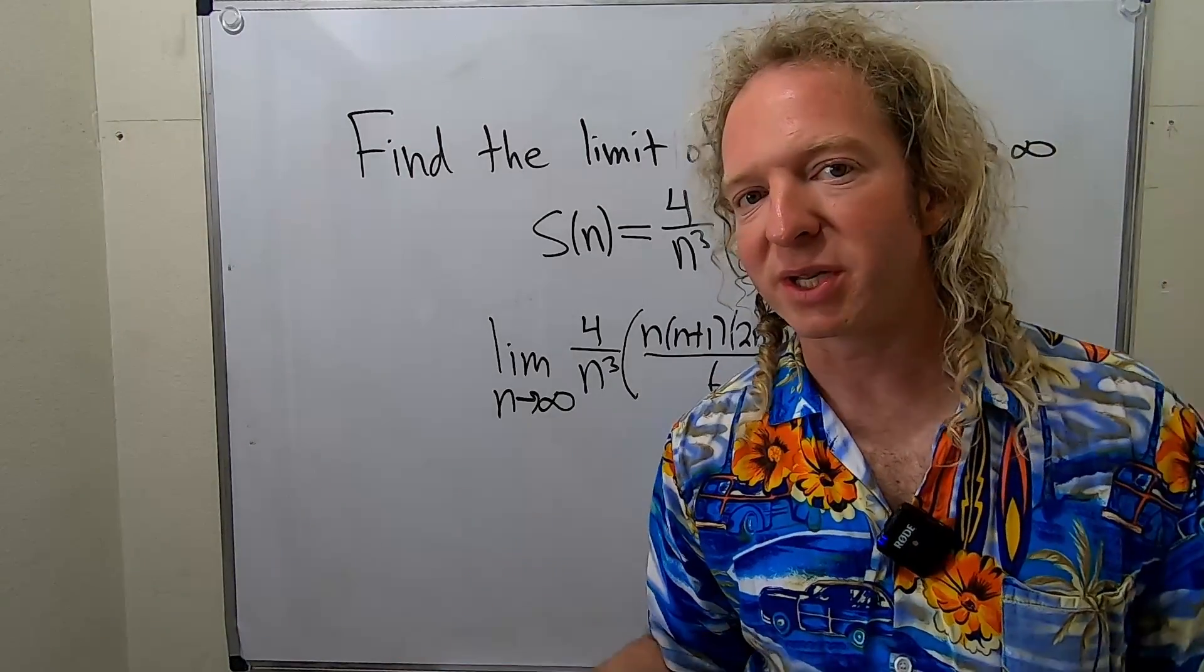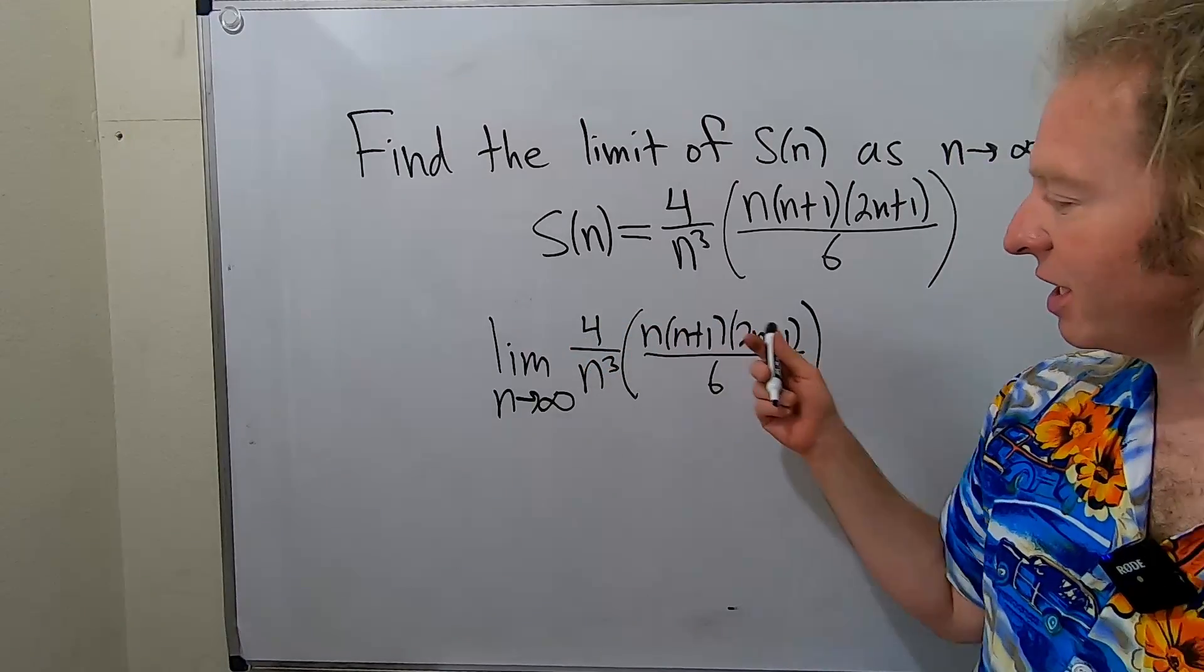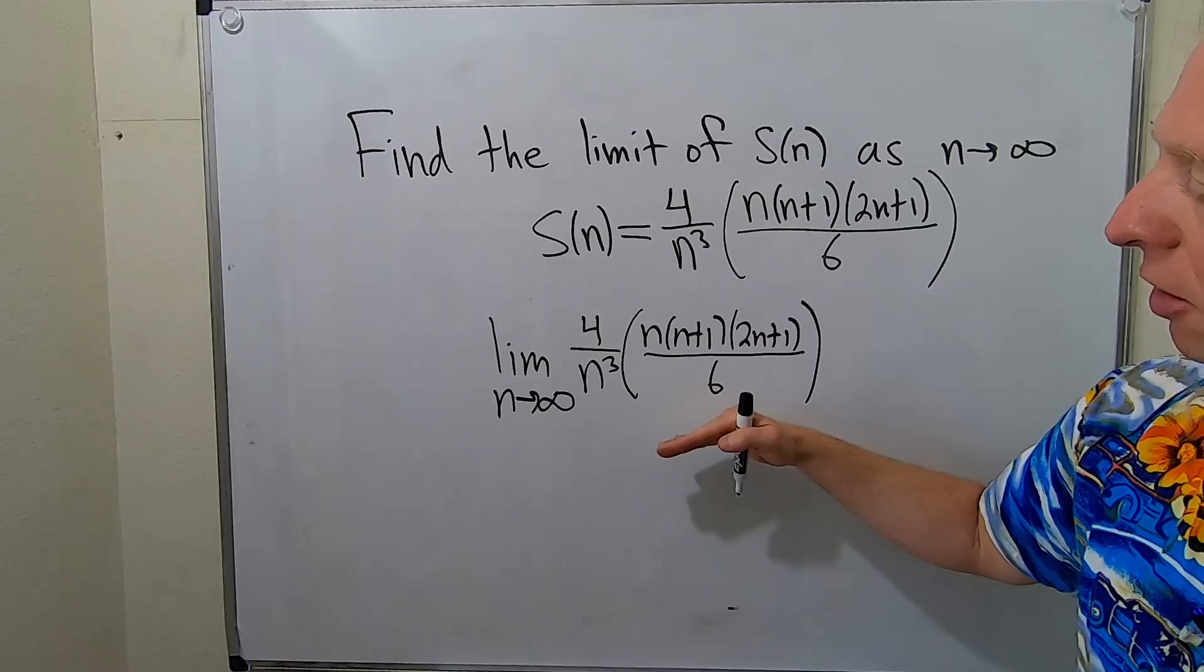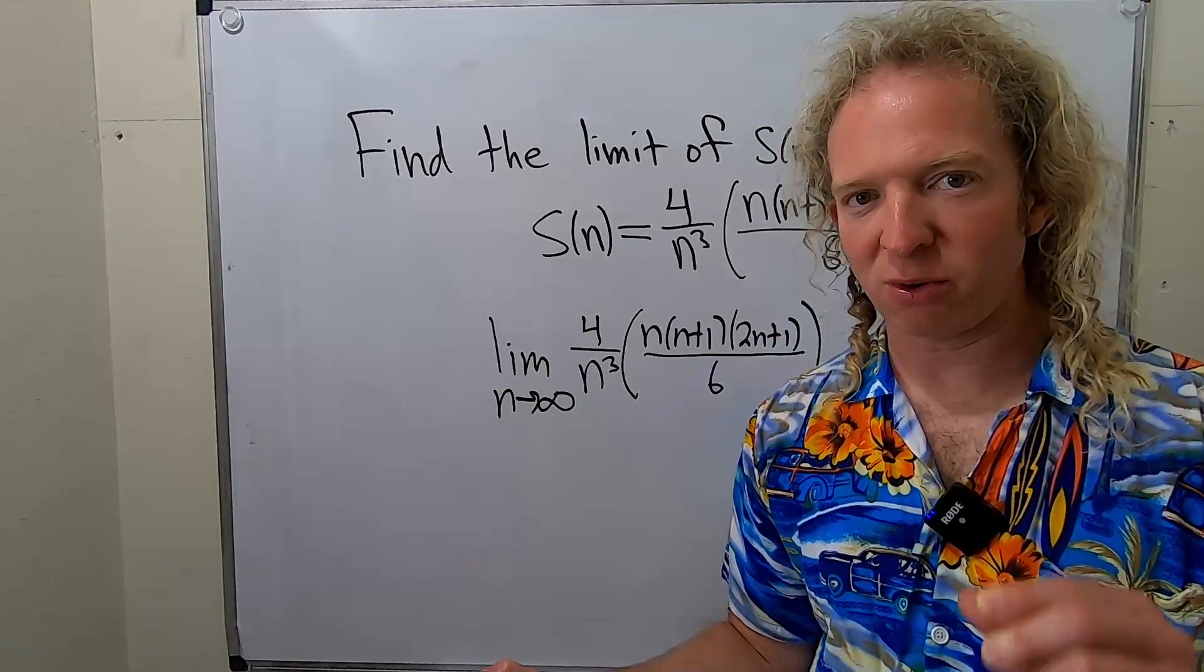So basically, in these problems you're always going to get a nice number. This is a polynomial in n. On the bottom, you also have a polynomial. So whenever you have a polynomial over a polynomial and the degrees are the same, the answer is the ratio of the coefficients.